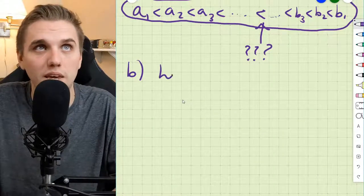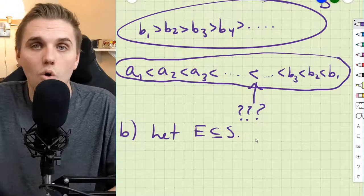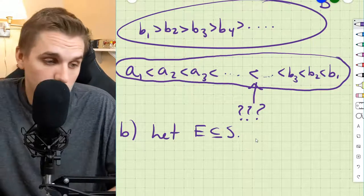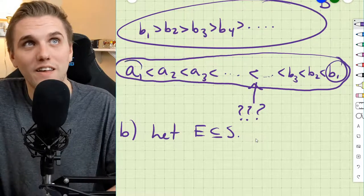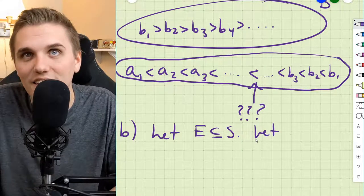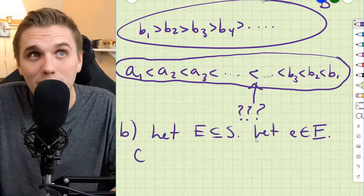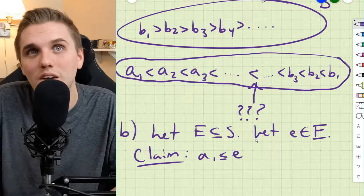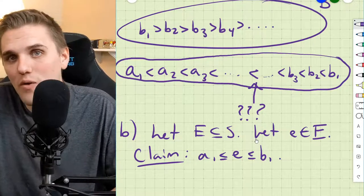Now let's do part b. Let E be a subset of S. We need to show that this set E is bounded, which means I need to find an upper bound and a lower bound. No matter what, I'm going to be able to do that. So let e be an element in E. I claim that a1 is less than or equal to e, which is also less than or equal to b1.